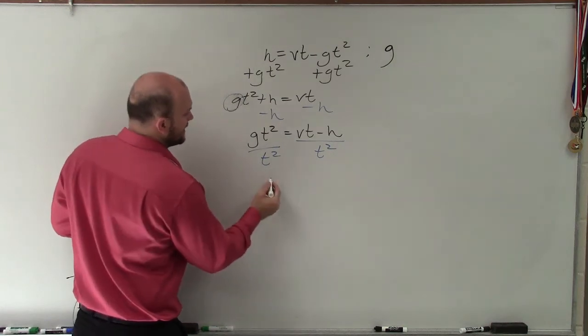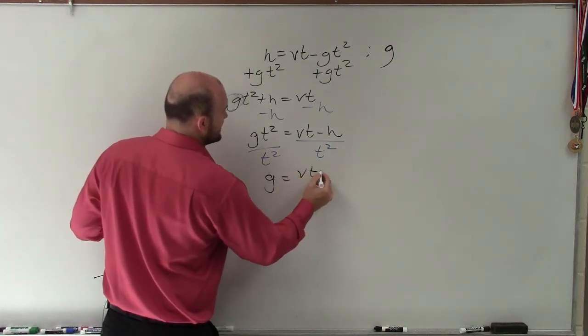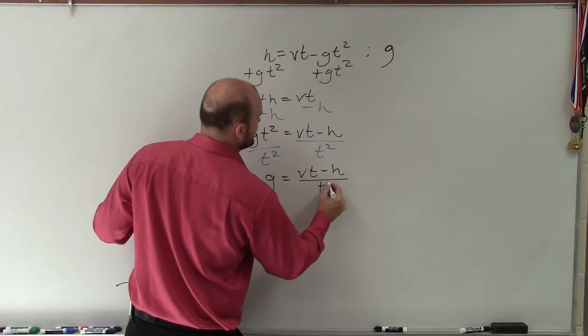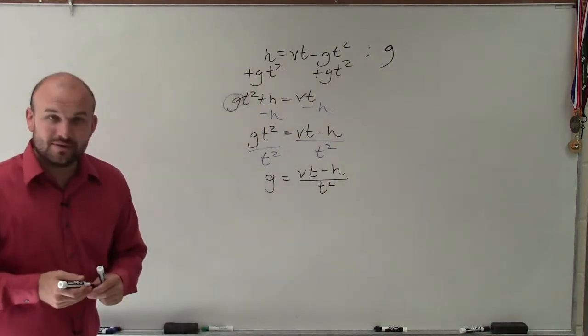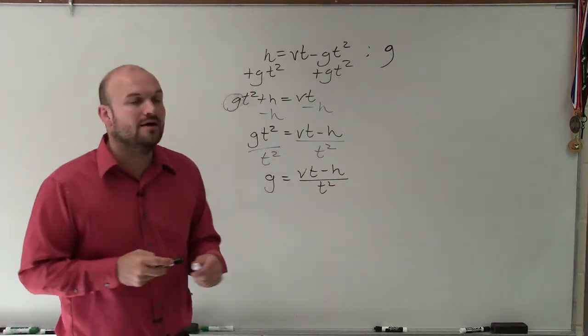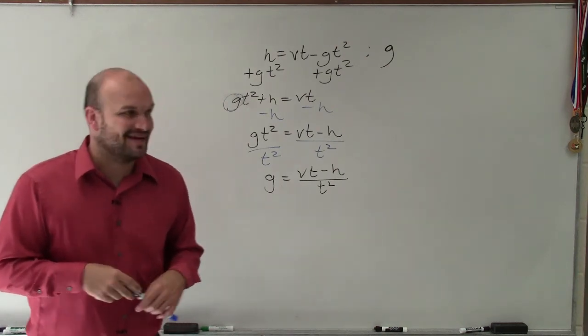So therefore, I now have g equals vt minus h divided by t². So there you go, ladies and gentlemen. That is how you solve for your variable using your inverse operations. Thanks.